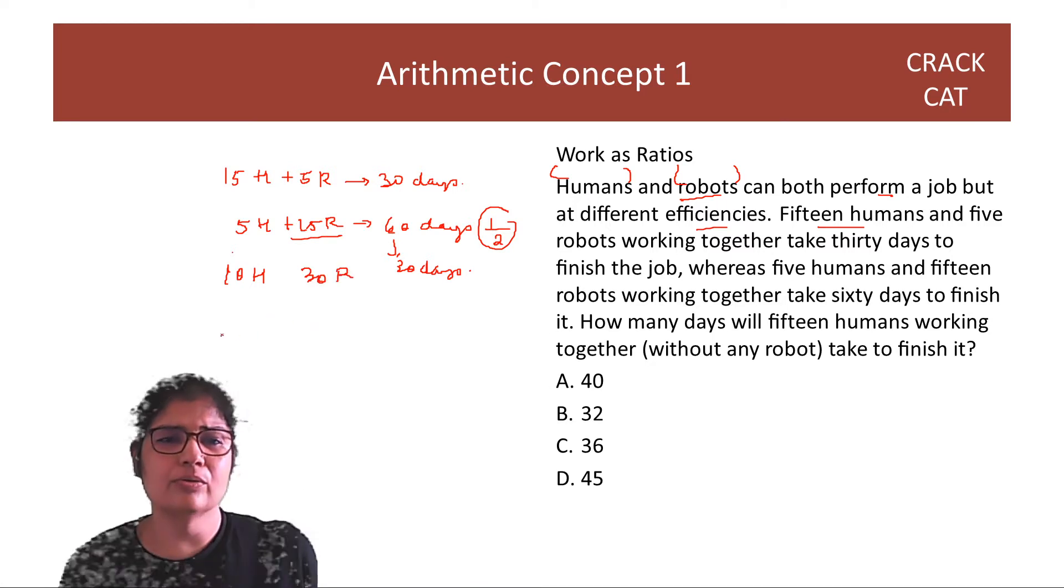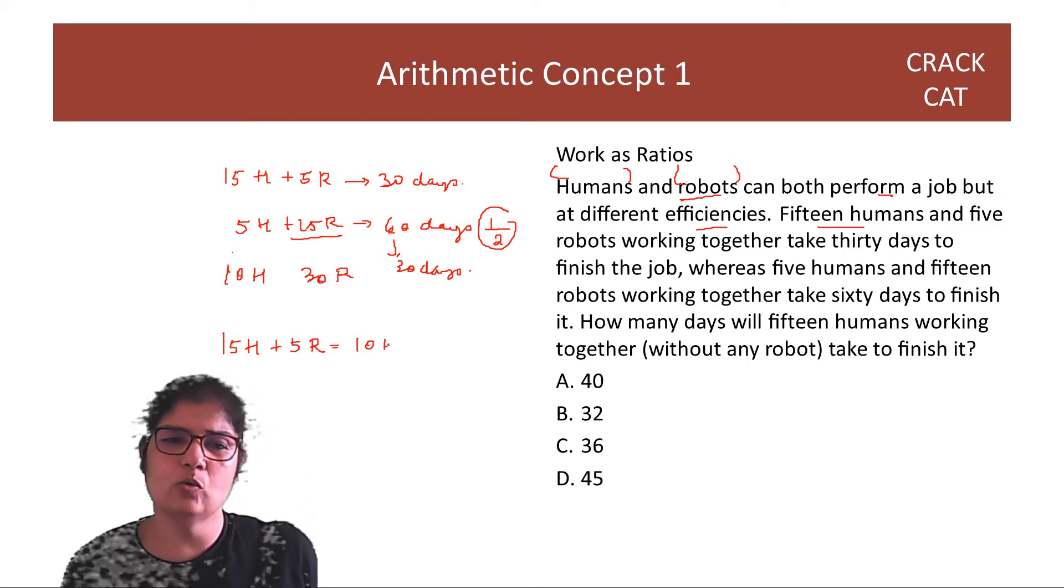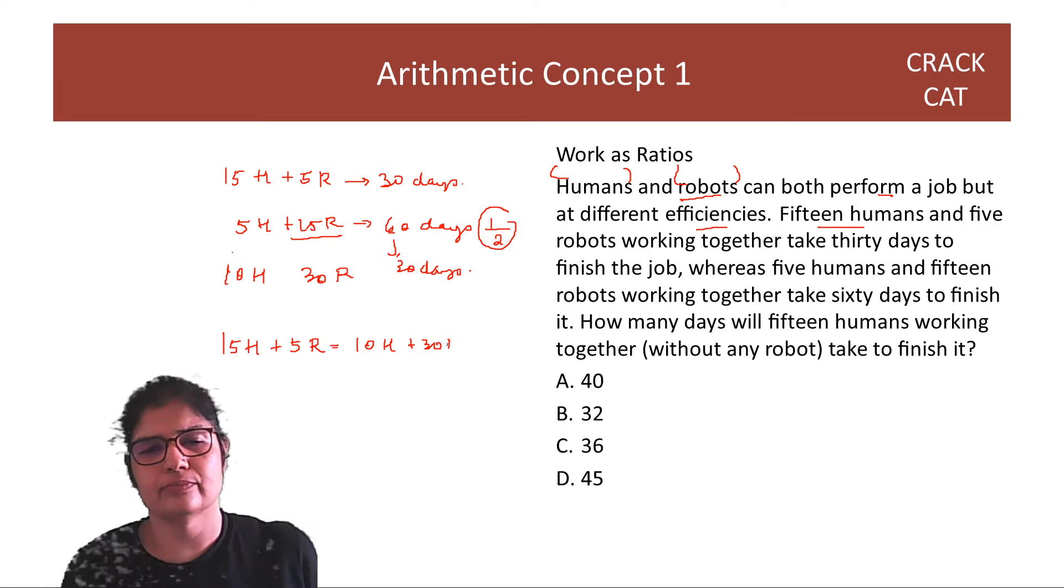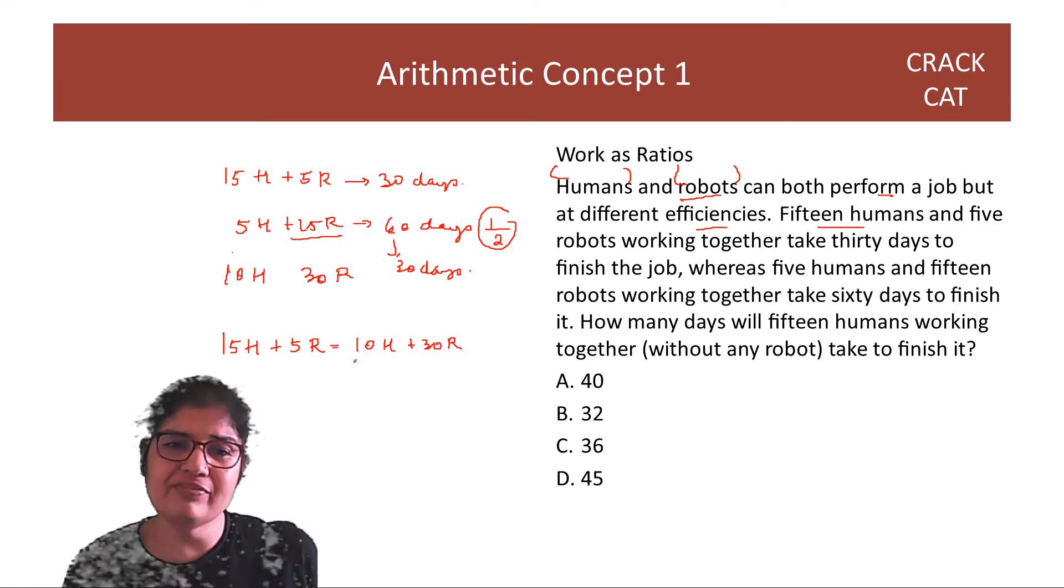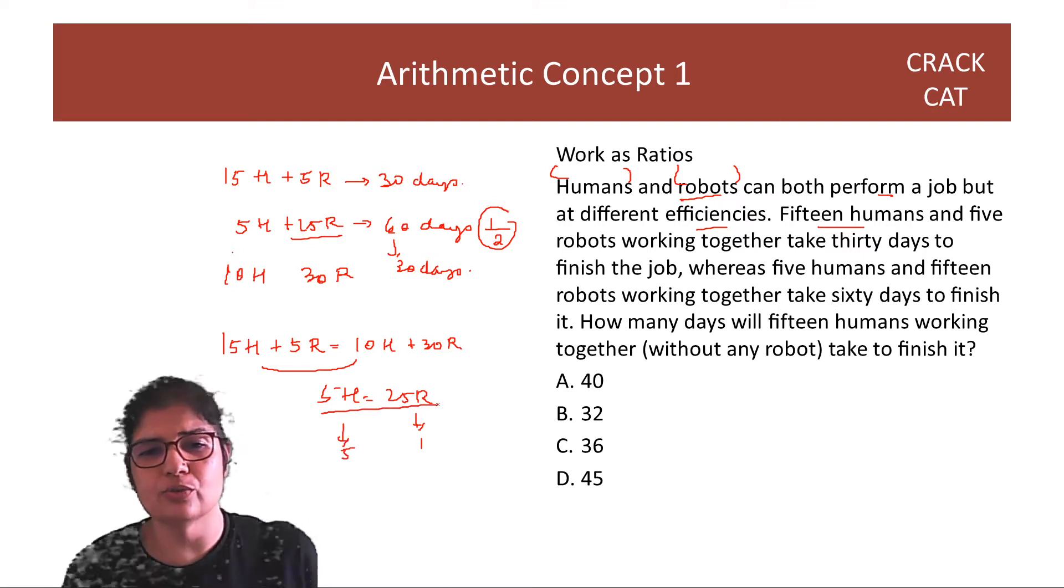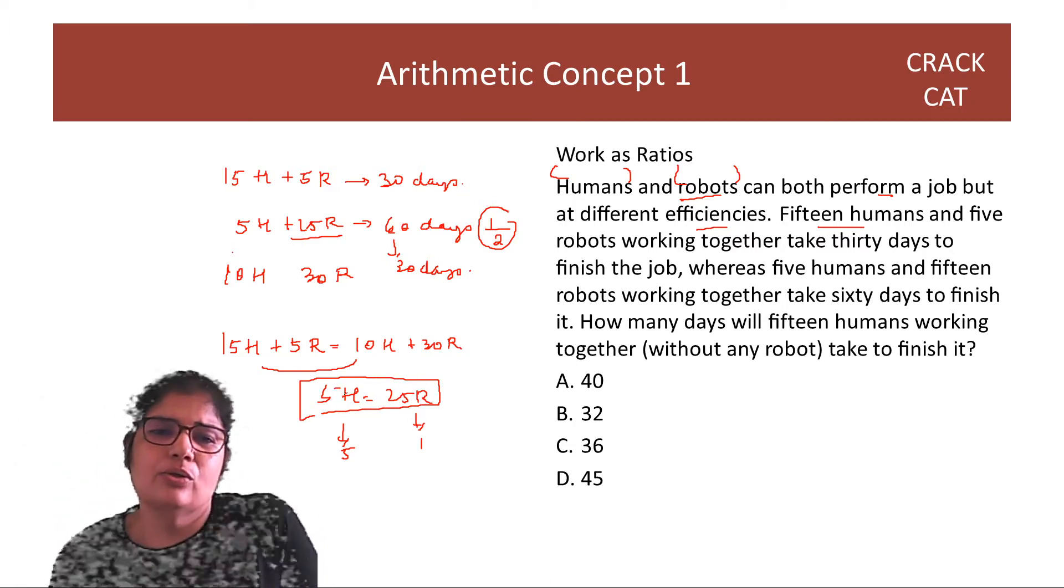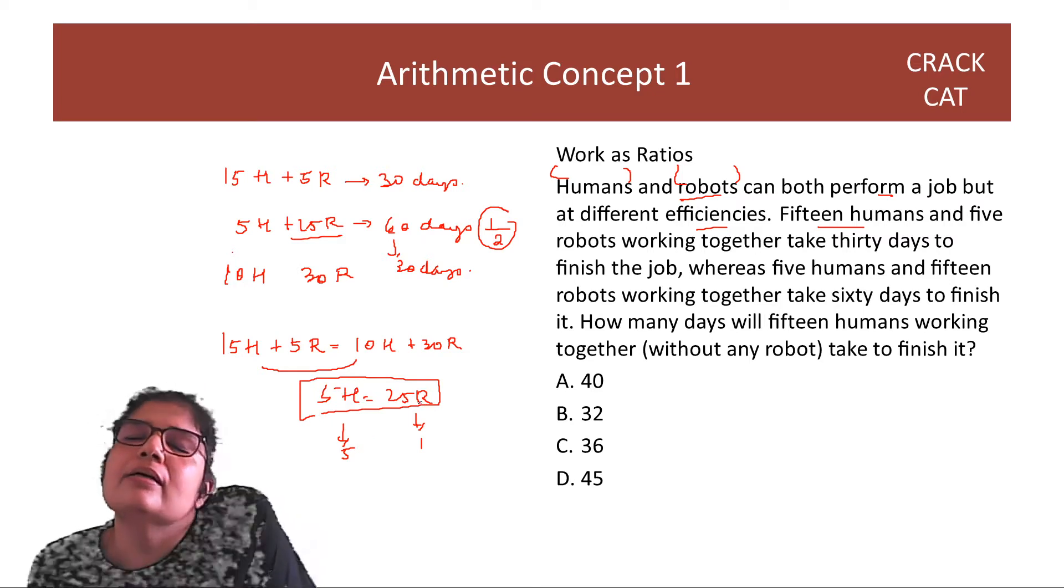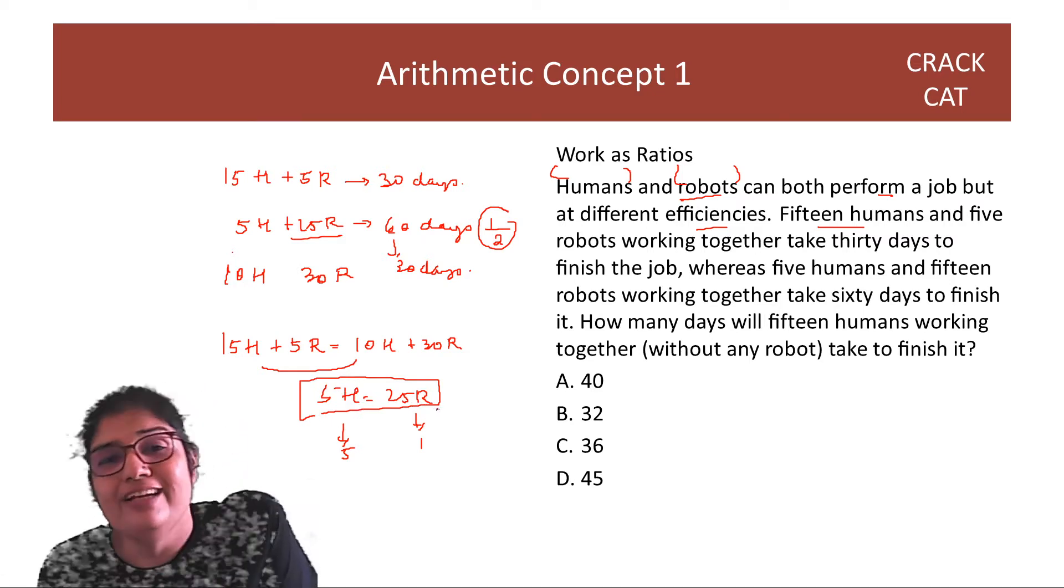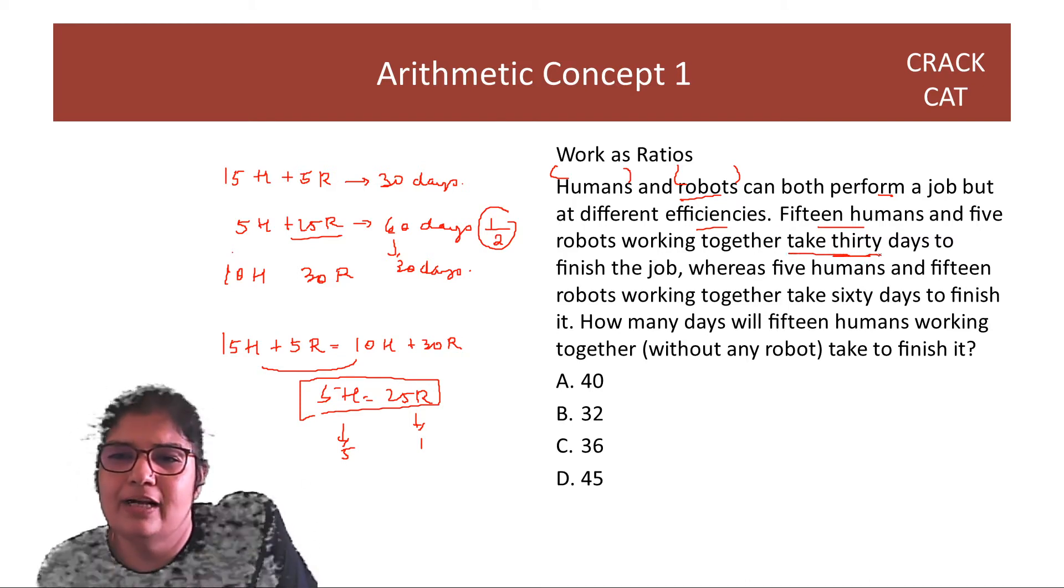So now, the work that 15 humans and 5 robots do in a day is done by 10 humans and 30 robots. And now, we will find the ratio. So 5 humans ka kaam hai, wo 25 robots ka kaam hai. So if a robot is doing 1 unit a day, a human is doing 5 units a day. So this is the ratio. Yehaan se hamein pata chal gaya hai ki human and robots ka kya interaction. Robot ka one unit and humans then are doing 5 times the work a robot is doing.